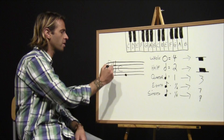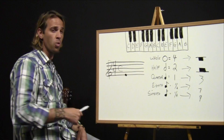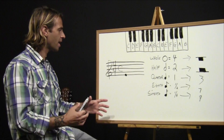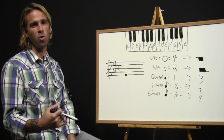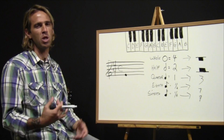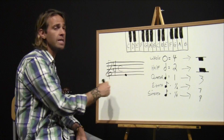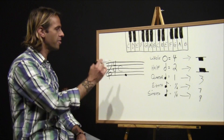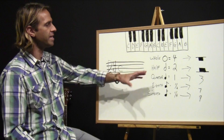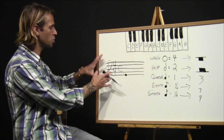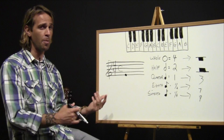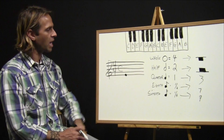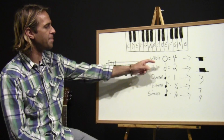We're going to talk about this in a time signature. The time signature is the double number you see here — it says four-four. We're going to do a whole chapter on time signatures, but for right now it's important to know we're looking at four-four, which is the most common time signature in music. Sometimes you'll see it written as a 'C' on the staff, standing for 'common time.' These values can change according to the time signature, but today we're looking at it in four-four.